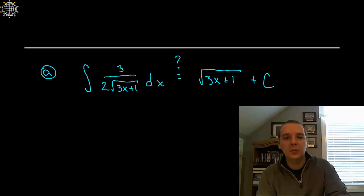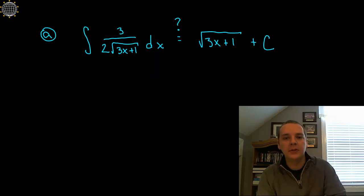Alright, now I've got two examples here. Here's the first one, it's kind of an uglier integral of 3 over 2 times the square root of 3x plus 1 dx, and so I worked this one before I started the video and I think this is the answer. Maybe I'm going to throw a little twist in here.